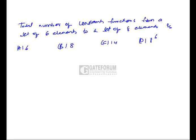A constant function is a function in which the range is some constant. If f is a function from set A to set B, and if all the elements of set A map to a single element of set B, then f is a constant function.